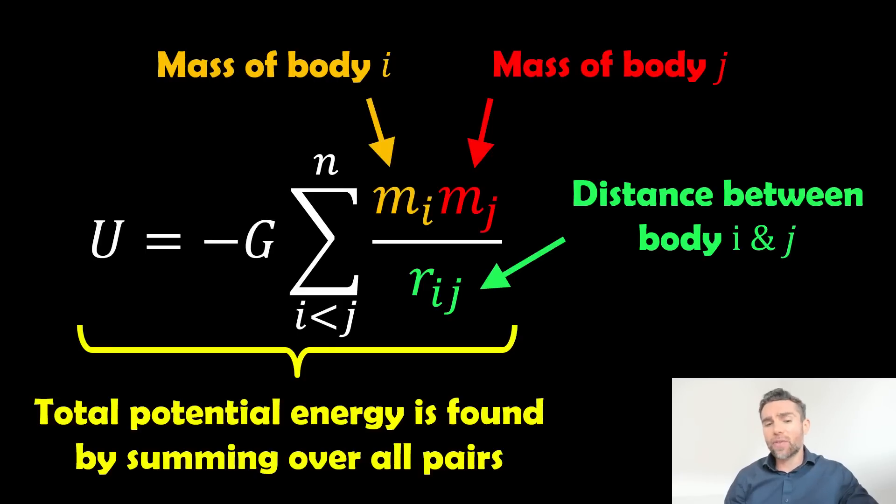We could do the same thing for the total potential energy. And we do that by summing over all the pairs. So this time around, we're going to have a body i and a body j. And we're going to work out the potential energy between those two. And we do that for all of the pairs in the system. So here we've basically got the mass of body i, the mass of body j. We've got two bodies here.